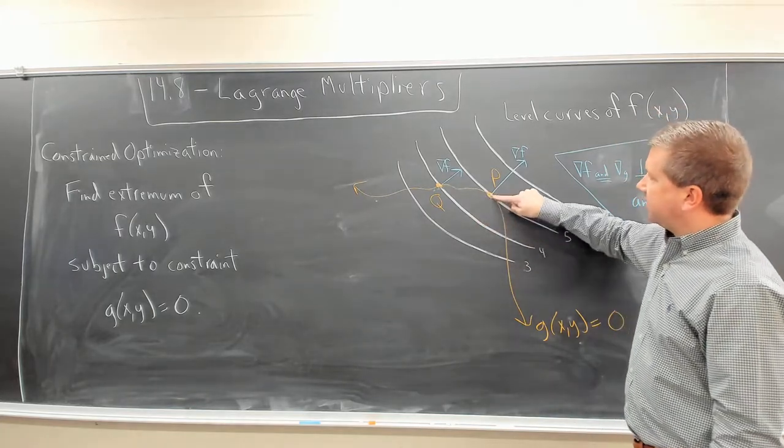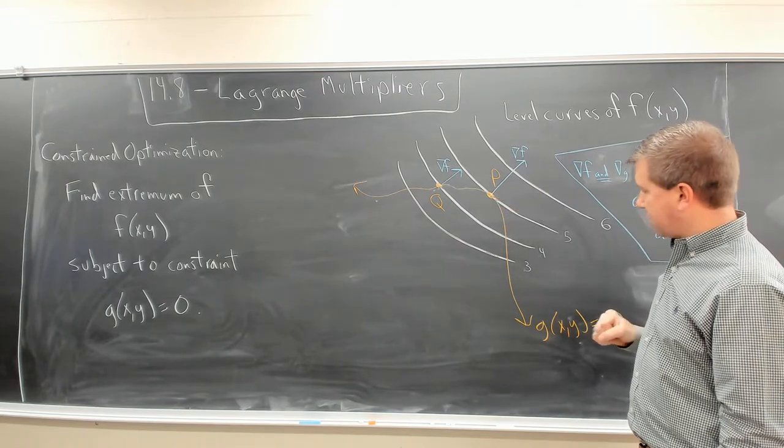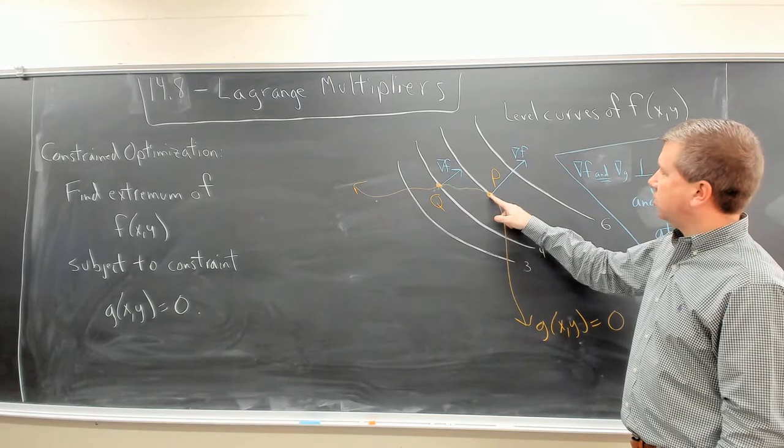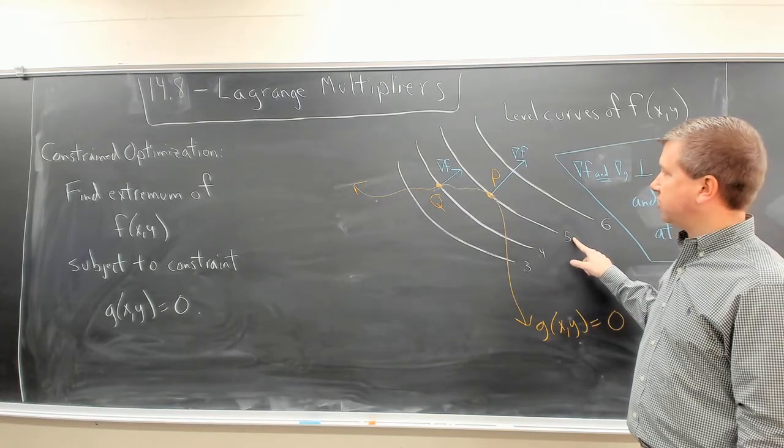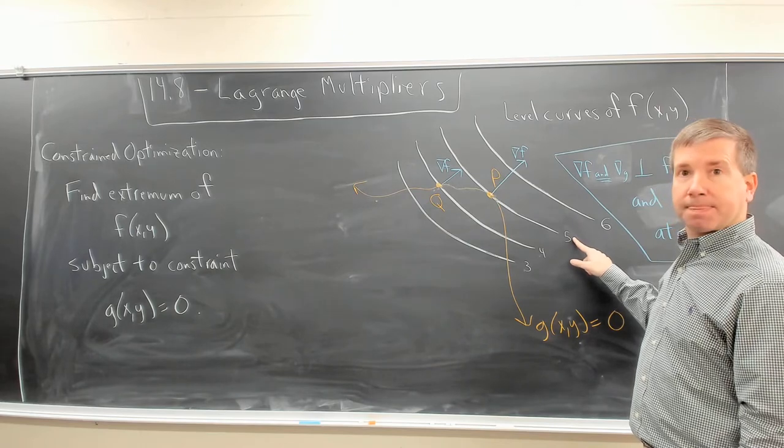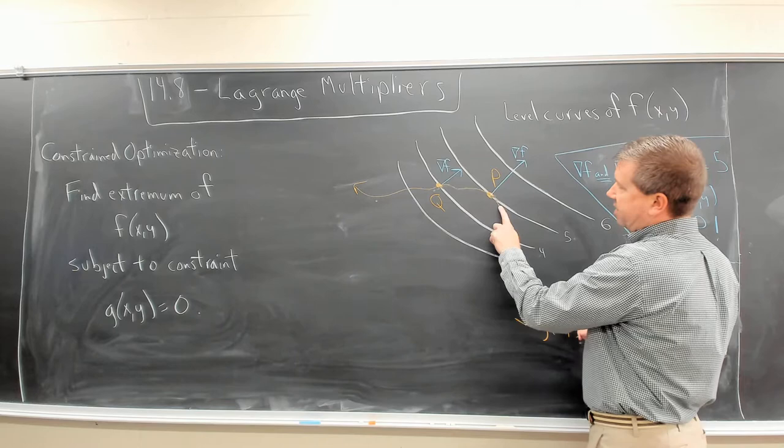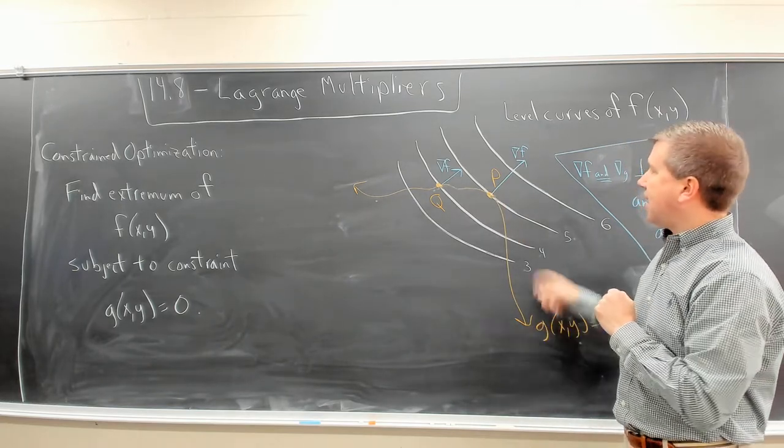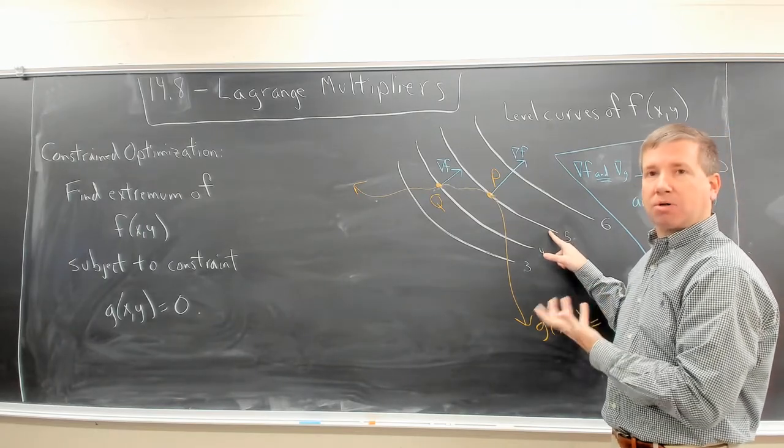Well, it turns out this is going to happen tangentially. Do you see that our constraint curve is tangential to the level curve corresponding to a function value of 5? If I'm on the left or to the right of p along this constraint curve, I'm no longer on the level curve z equals 5. I would be on a smaller level curve.